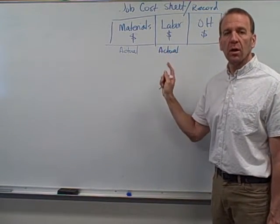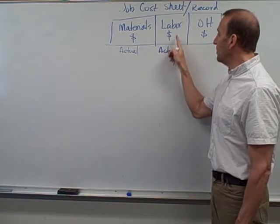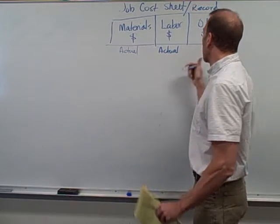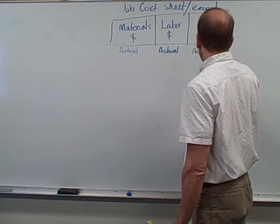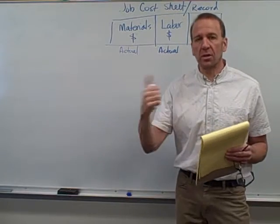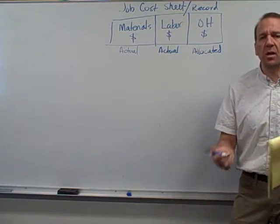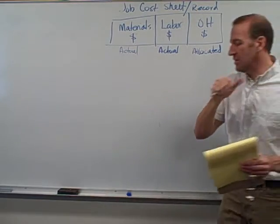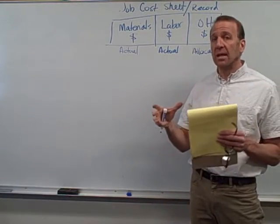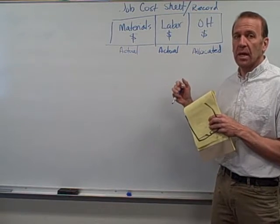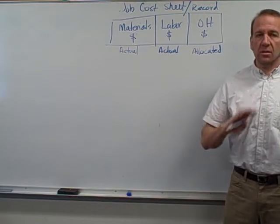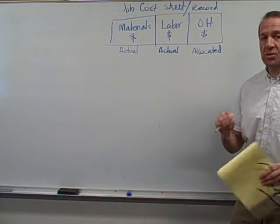Same thing with labor. As these people work, we'll take their actual wages and put them into the job cost sheet. So we're keeping track of actual material and labor costs. Overhead is not actual — it's allocated. The reason being is there are lots of overhead costs we're accumulating: insurance costs, rent, salaries for supervisors, all sorts of costs. They're taking place throughout the time period, so it's really hard to get the exact cost and allocate those exact costs. That's why we accumulate the costs separately and allocate overhead as it's incurred. We're going to figure out a way to allocate this, and that's what I'm going to show you in this video.